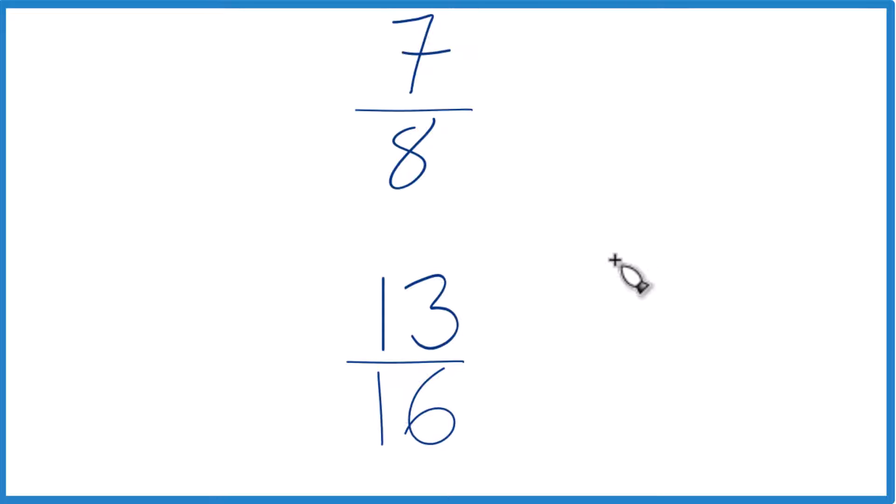Another way to do it, find a common denominator. We have 8 and 16, but if these denominators were the same, we would just compare the numerators and we'd know whether 7 eighths is larger or smaller than 13 sixteenths.